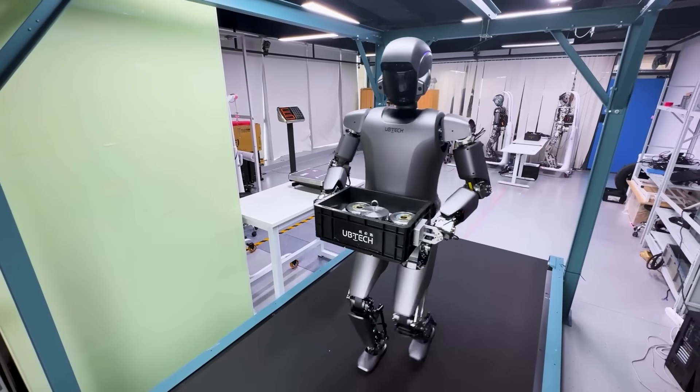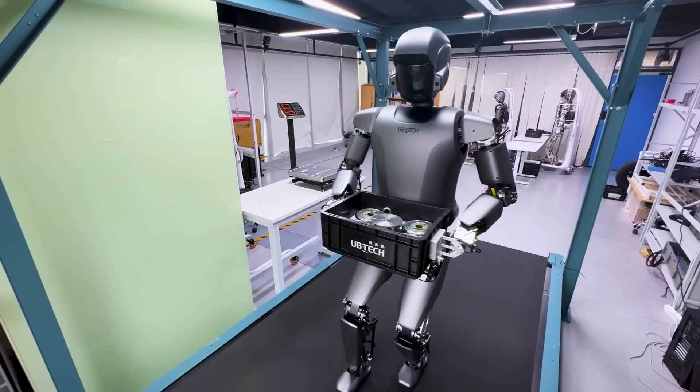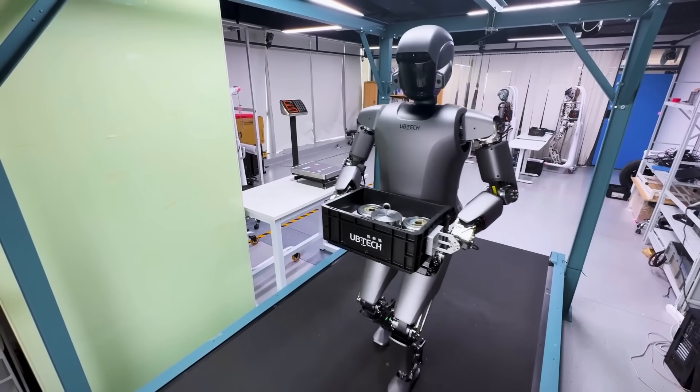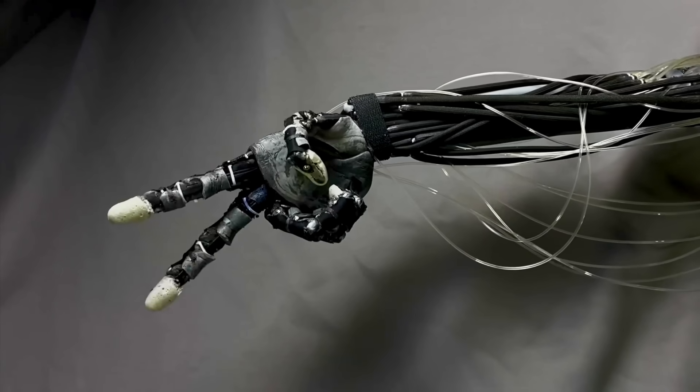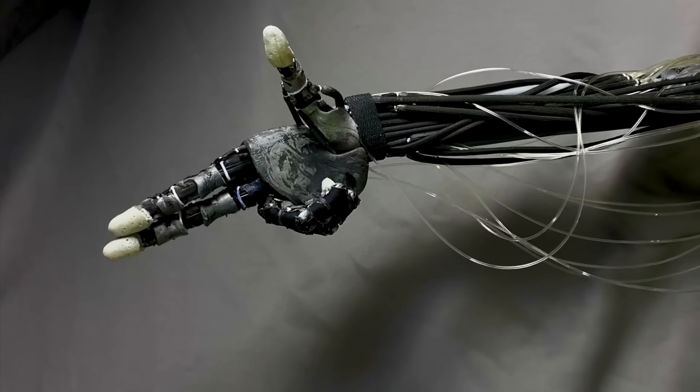So where slow, precise, and stiff movements would usually be a dead giveaway that you're dealing with a robot, Clone Robotics' hydraulic muscles are making it impossible to tell.